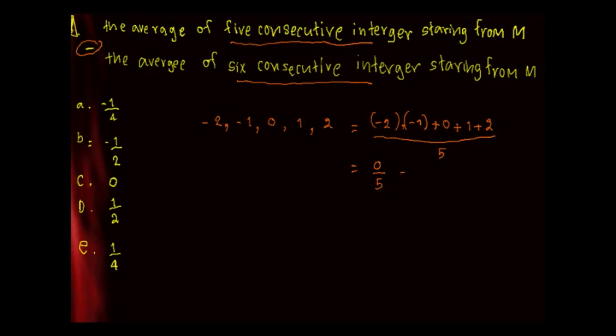Now the average for six consecutive, we have equal to negative 2 plus negative 1 plus 0 plus 1 plus 2 plus 3 divided by 6, equal to 3 over 6, so one-half.